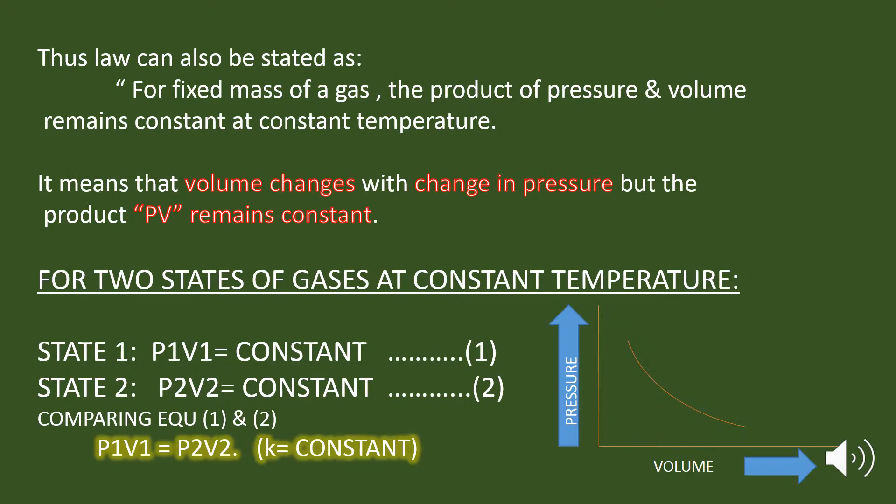Graphically, a plot of volume against pressure of a gas at a constant temperature is a hyperbola. As you can see here, the graph, which is a hyperbola, shows the relationship between the pressure and the volume. And this is the inverse relationship between the pressure and the volume.